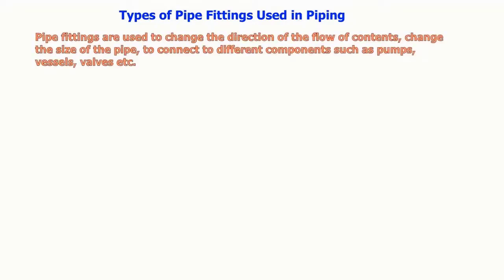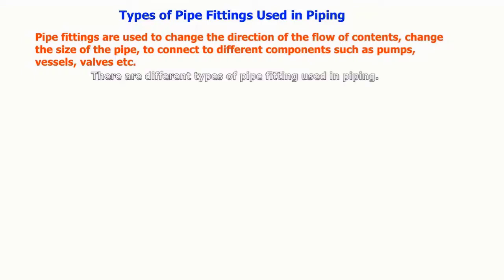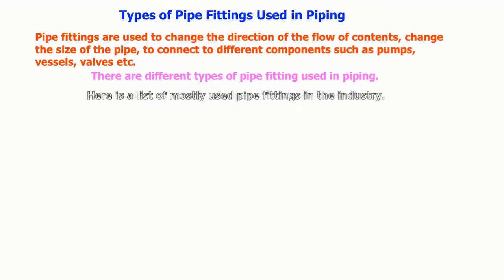Types of pipe fittings used in piping. Pipe fittings are used to change the direction of the flow of contents, change the size of the pipe, to connect to different components such as pumps, vessels, valves, etc. There are different types of fittings used in the piping.